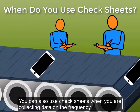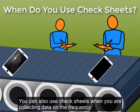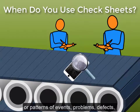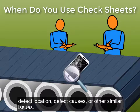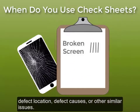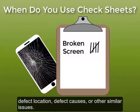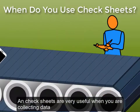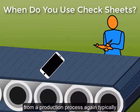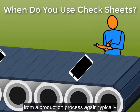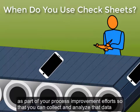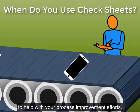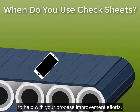You can also use check sheets when you're collecting data on the frequency or patterns of events, problems, defects, defect location, defect causes, or other similar issues. Check sheets are very useful when you're collecting data from a production process — again, typically as part of your process improvement efforts, so that you can collect and analyze that data to help with your process improvement efforts.